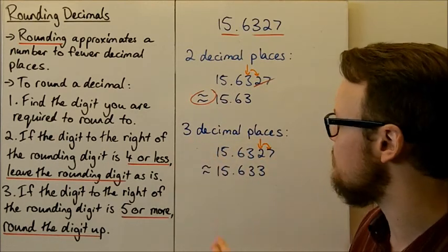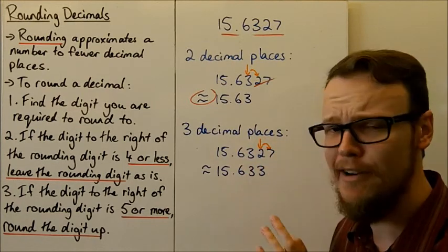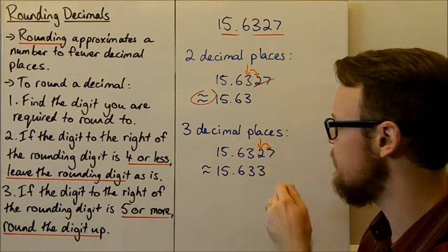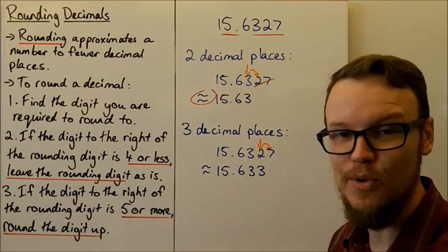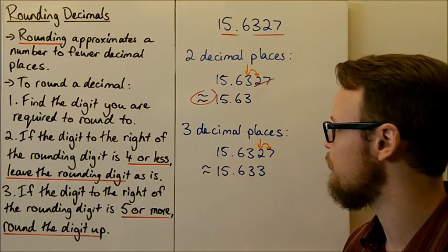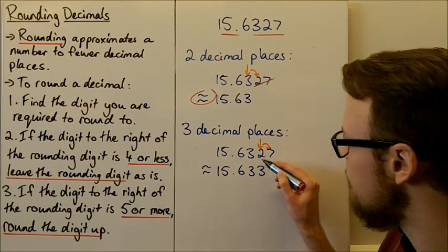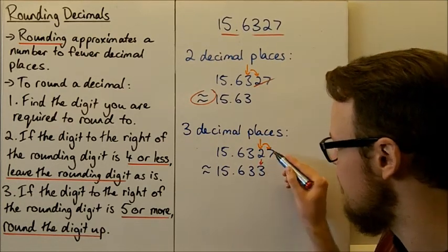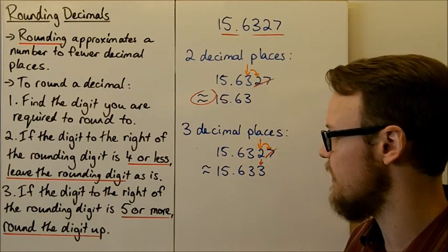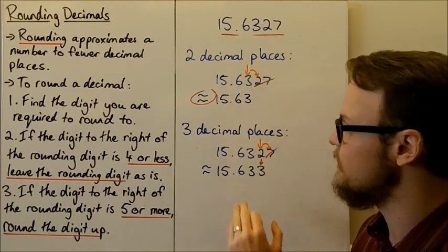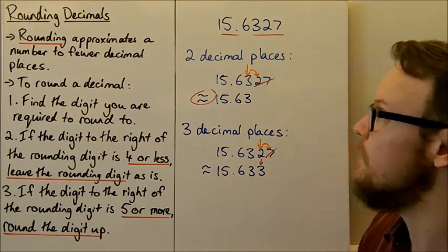For three decimal places, we need to look at the third decimal place: 1, 2, 3. Put an arrow to indicate that's the one we're going to round to. Look to the number to the right — that number 7 is 5 or more, it's bigger than 5, so we need to round this number up. So 2 becomes 3, and we don't worry about any numbers that come after that. This number rounded to three decimal places is 15.633.